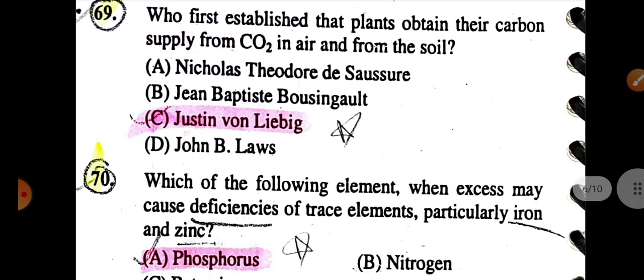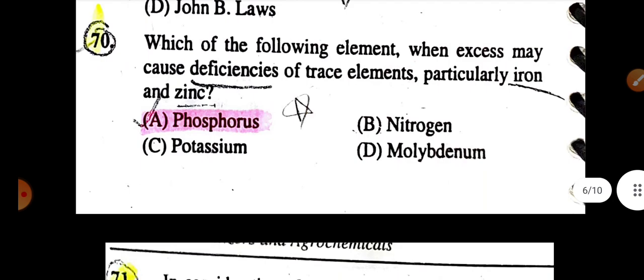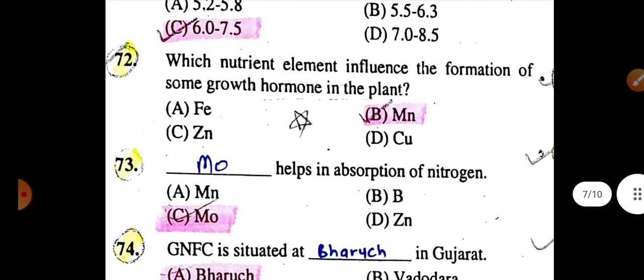Who first established that plants obtain their carbon supply from CO2 in air and from the soil: Justus von Liebig. Which of the following elements, when in excess, may cause deficiency of trace elements, particularly iron and zinc is phosphorus. In consideration of plant availability of all essential nutrients, what is the typical range for optimal pH for many agricultural soils is 6 to 7.5.